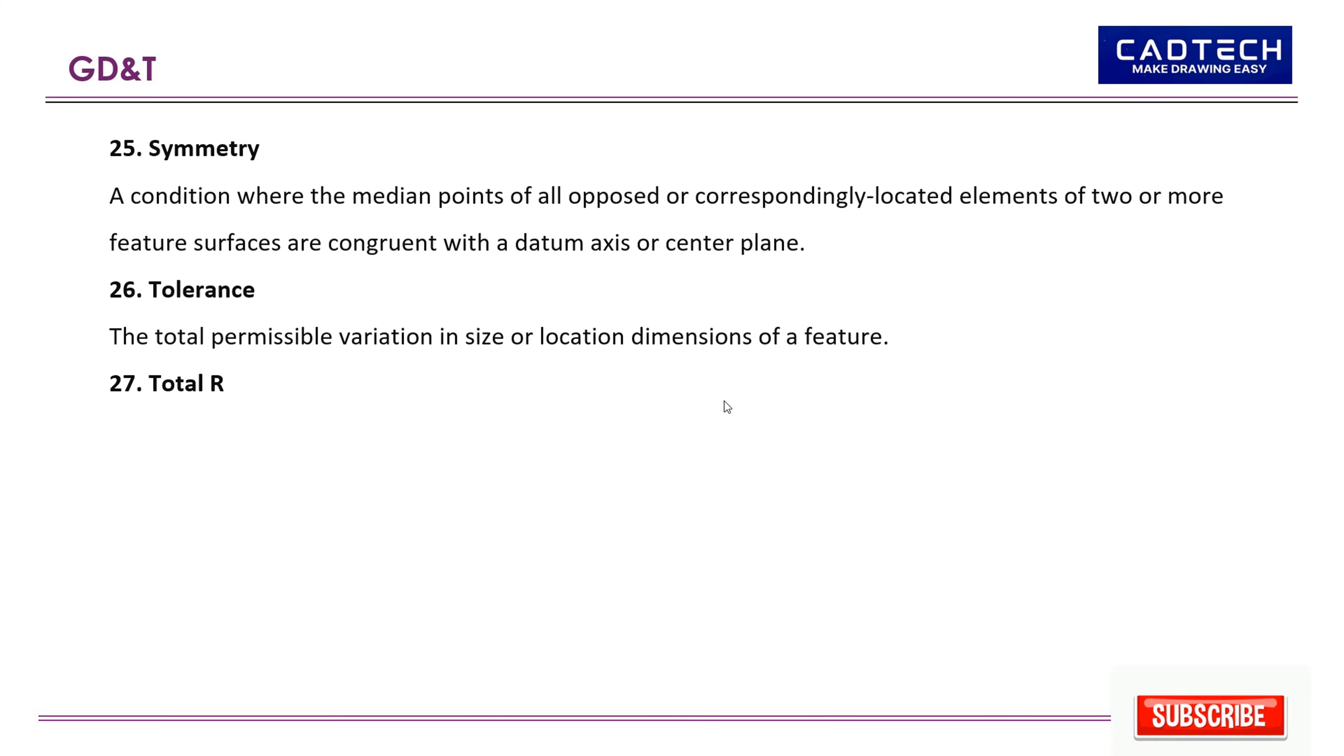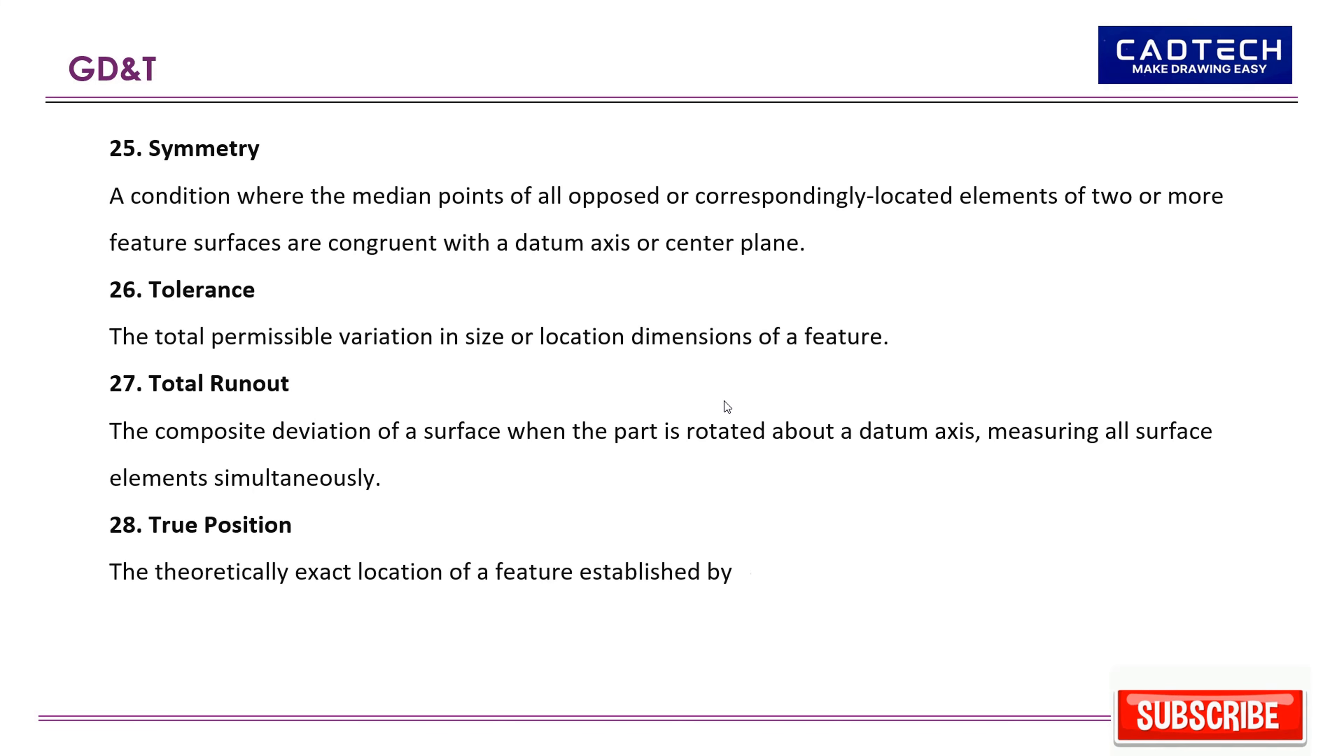27. Total runout: The composite deviation of a surface when the part is rotated about a datum axis, measuring all surface elements simultaneously. 28. True position: The theoretically exact location of a feature established by basic dimensions.